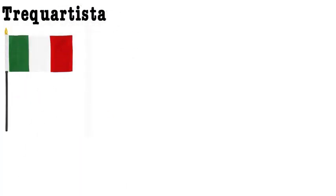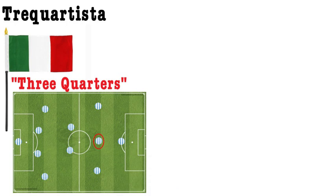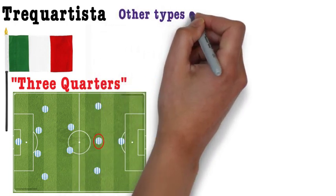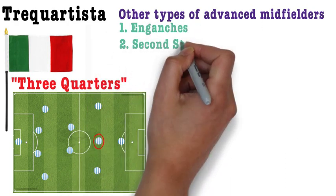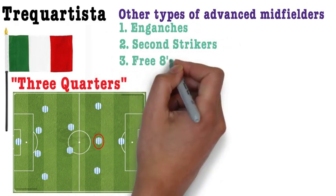The first player role we'll be looking at is the trequatista. Trequatista is Italian for three quarters, which means that a player playing in the trequatista role plays three quarters up the pitch. To be more specific, the trequatista is a type of advanced midfielder, playing in front of the central midfielders but behind the centre forward. Other types of advanced midfielders consist of the enganche, second strikers and the three eights.